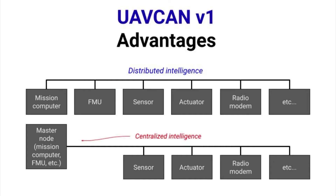UAVCAN makes it possible to implement complex distributed intelligence. Each node can publish messages on the bus and any node can subscribe to these messages. There is no master node, meaning each node can do the computing independently and the bus can continue to work even if any of the nodes is dead. In contrast, networks with centralized intelligence protocols such as micro-ROS or CANopen are critically dependent on the availability of the master node.